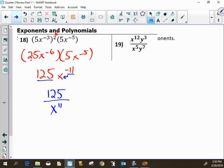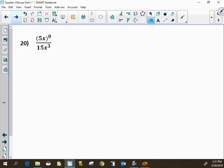This one, when you divide exponents that have the same base, you subtract. But then a negative exponent means that you move it to the bottom. And also remember that anything raised to the 0 power equals 1. So this is just 1 over 15x to the 3rd power.